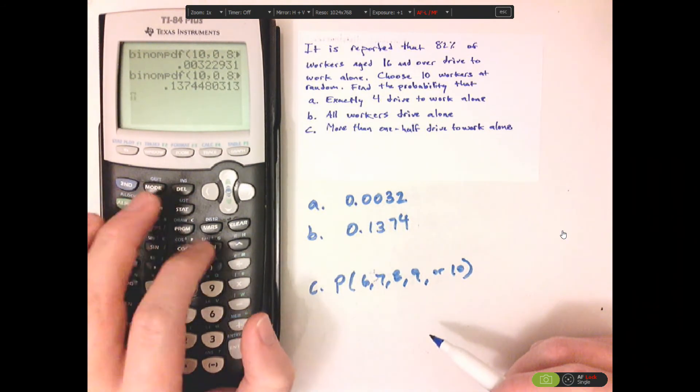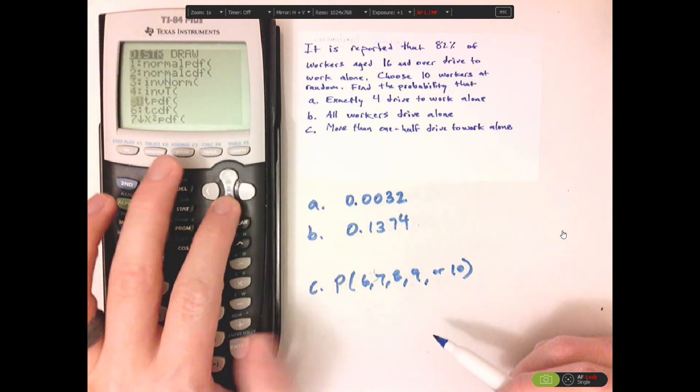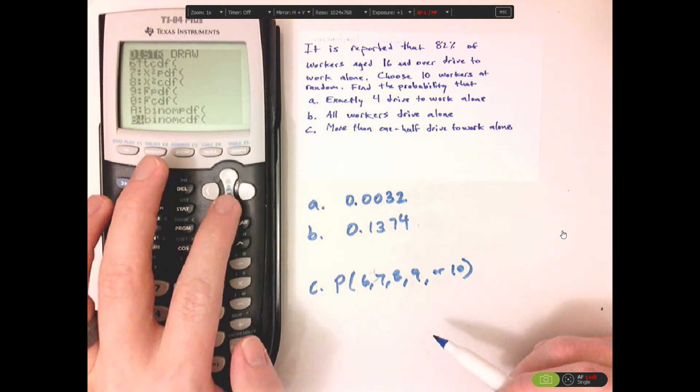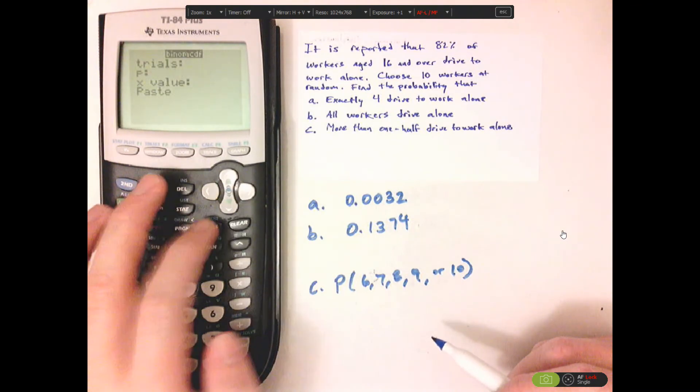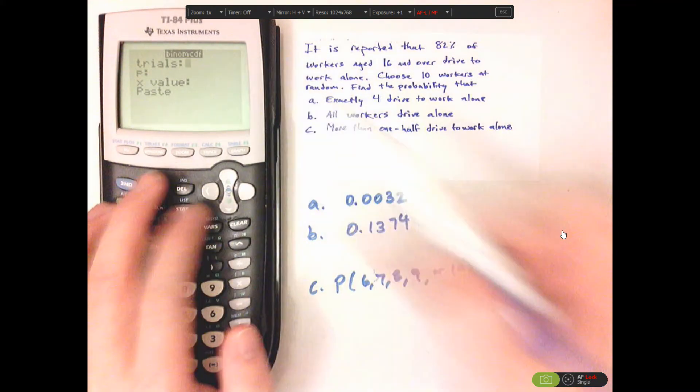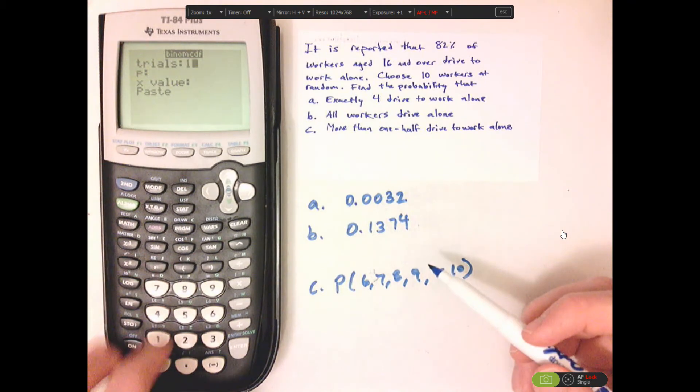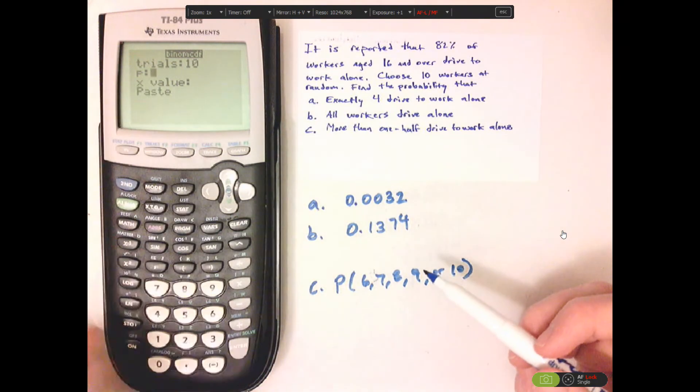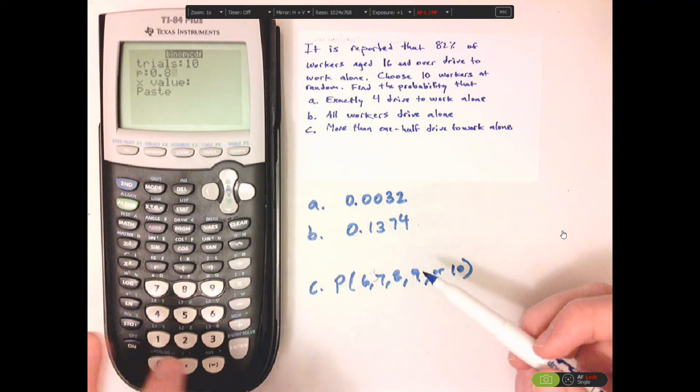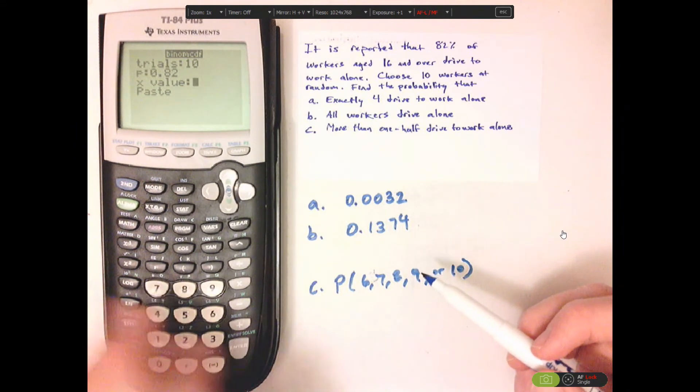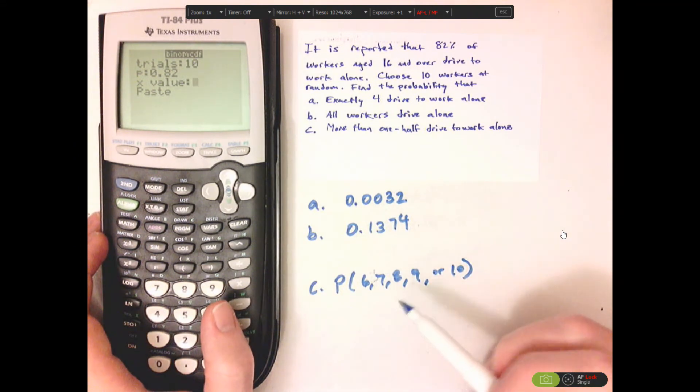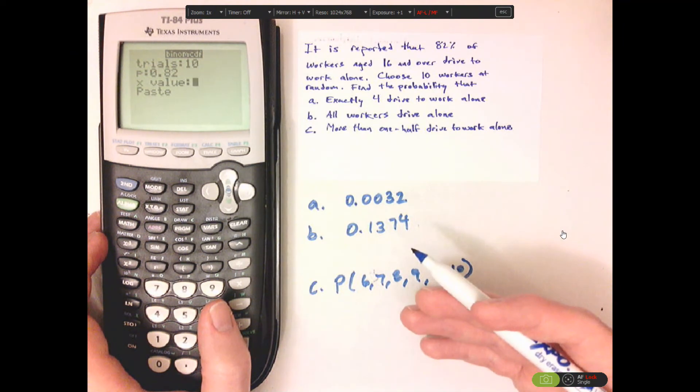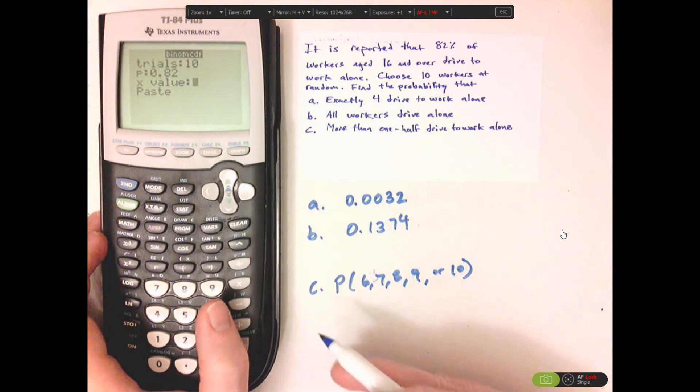So seconds, distribution. Now, notice I push CDF. So 10, P, 0.82. Now, here, I want everything above. See how this is, it's 6 or above. But this does everything, including that number, to the left of it. So it would do, like, 0, 1, 2, 3, 4, 5, if I do 5.